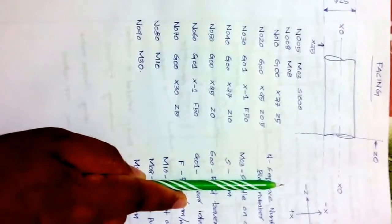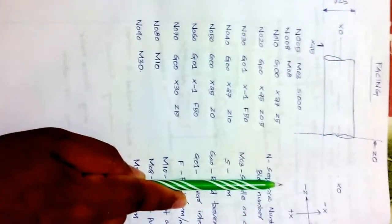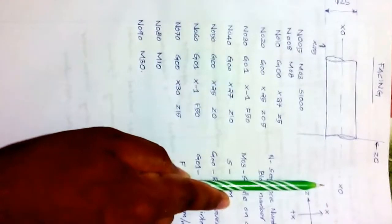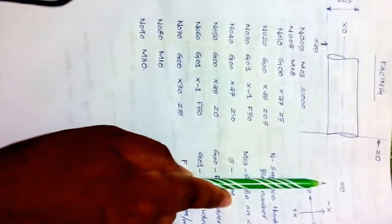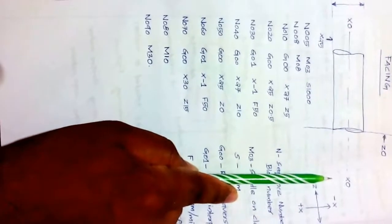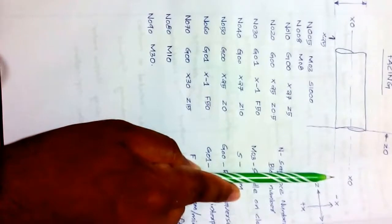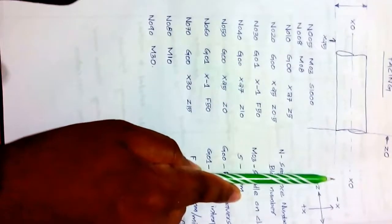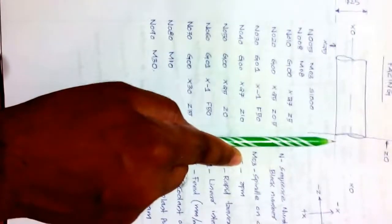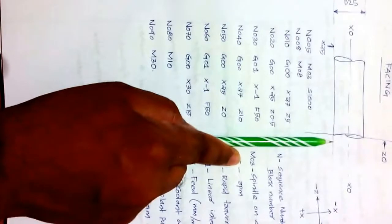N020: G00 X25 Z0.5. X25 is the line corresponding to the workpiece surface diameter. The tool's current position is X27 Z5, and with this block the tool moves rapidly to X25 Z0.5 — bringing it to the surface line but still 0.5mm away in Z.